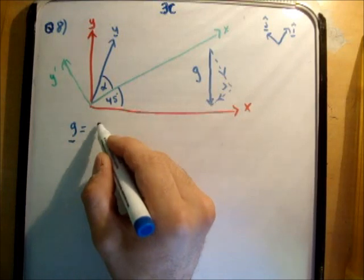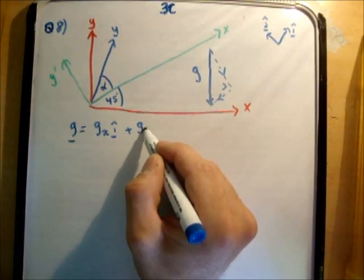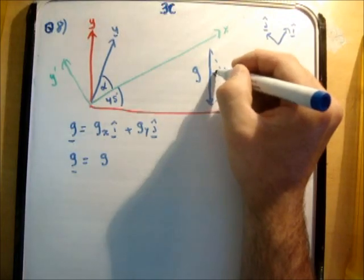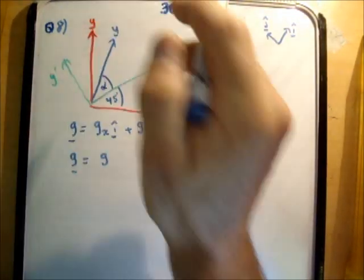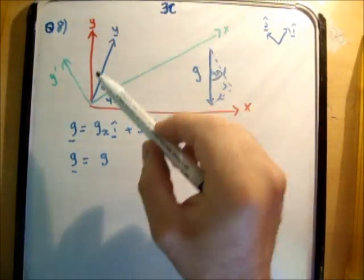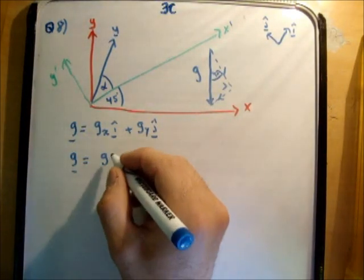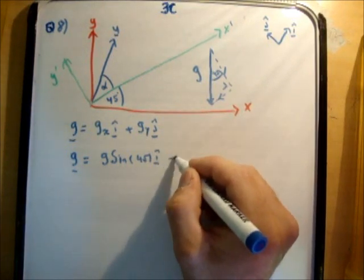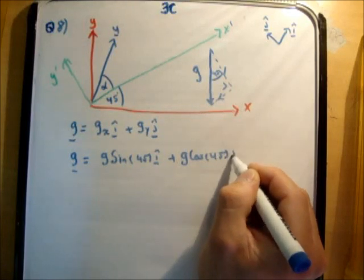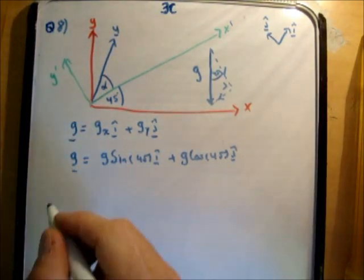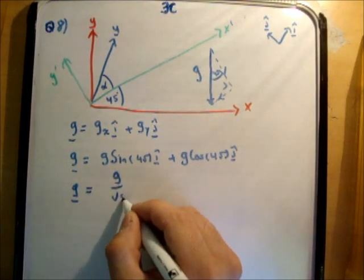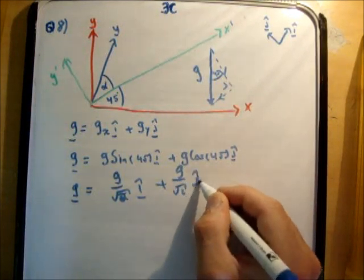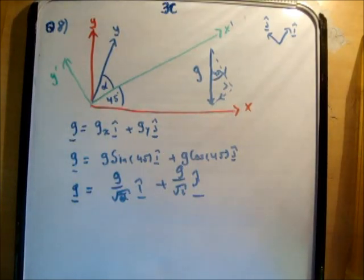So we know that g is equal to g sub x i-hat plus g sub y j-hat. g is equal to g times, now this angle here is also 45 degrees, because if you were to move this up here, the g sub y vector would bisect the x-prime axis at 90 degrees. So this is g times the sine of 45 i-hat plus g times the cos of 45 j. The cos and sine of 45 are 1 over root 2, so we get g is equal to g over root 2 i-hat plus g over root 2 j. All right, so we're okay so far.